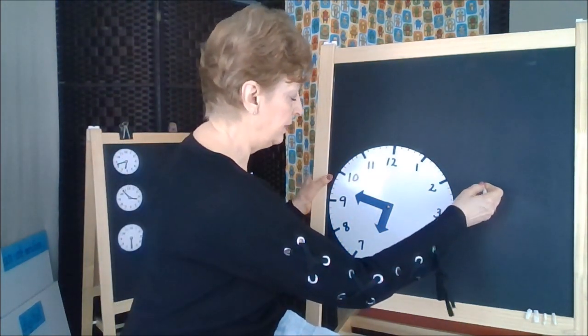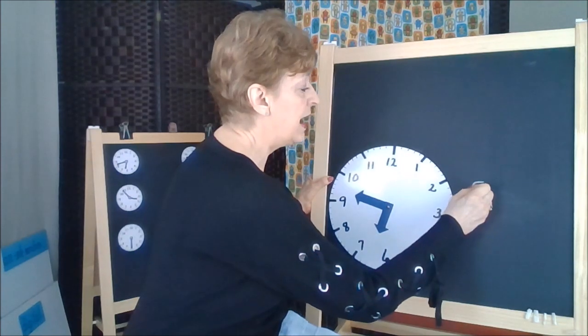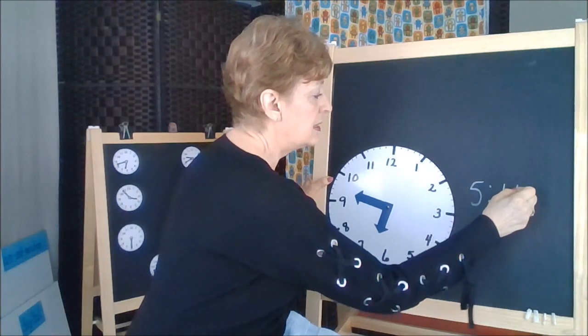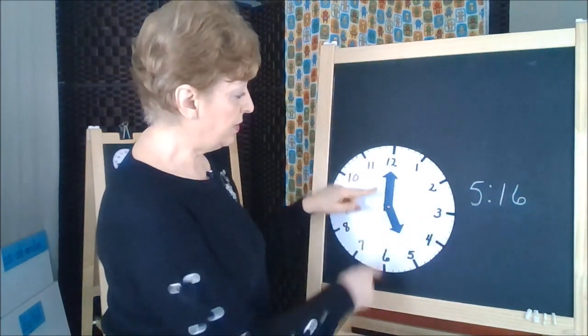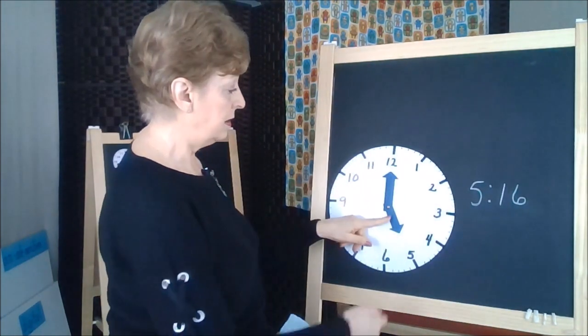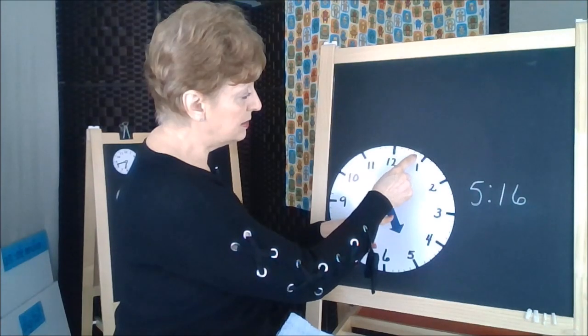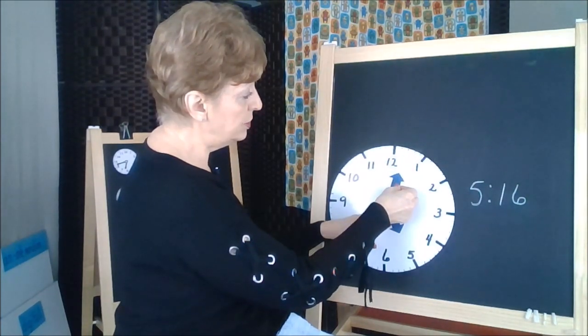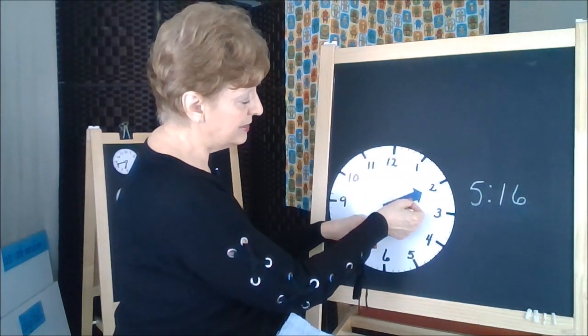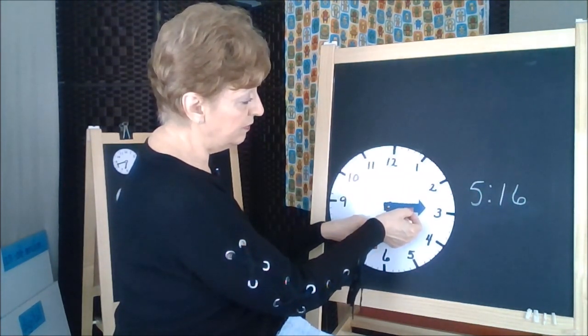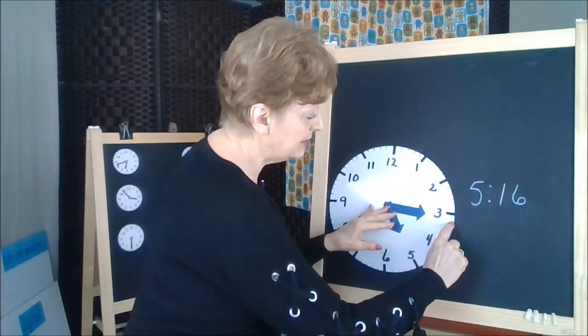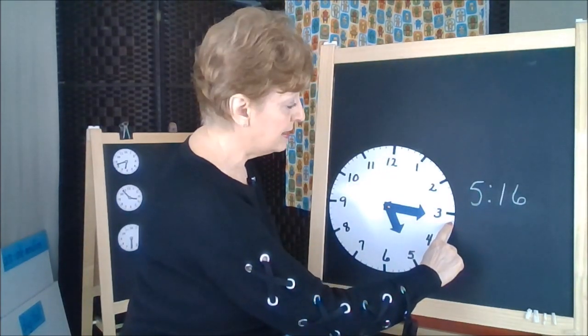Let's say we have maybe 5:16. We're first of all going to start with our 5 o'clock, the hour. Now we're going to deal with the minute hand. We could count all of the little spots between: 1, 2, 3, 4, 5, 6, 7, 8, 9, 10, 11, 12, 13, 14, 15, and 16. Do you see how this is pointing to this spot right there? That is 16.